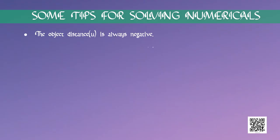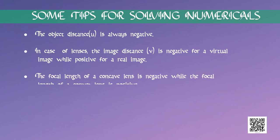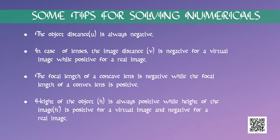Now it's time to solve certain numerical problems relating to lens formula and magnification. Here are some tips for solving numericals: the object distance u is always negative. In case of lenses, the image distance v is negative for a virtual image while positive for a real image. The focal length of a concave lens is negative while that of a convex lens is positive. Height of the object h is always positive, while height of the image h' is positive for a virtual image and negative for a real image.